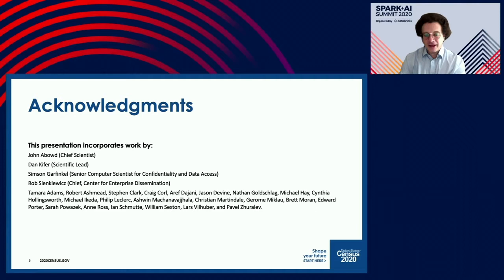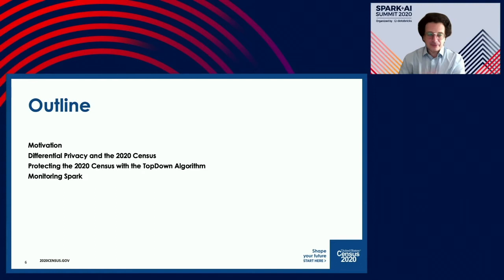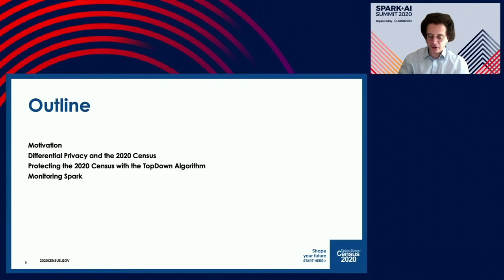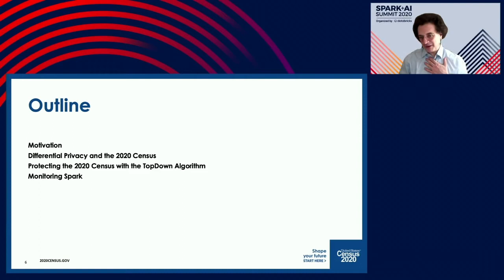Dan Kifer, the scientific lead, came up with the top-down algorithm, and we have a team with many people on it. The outline is: I'll first talk about the motivation behind our use of Spark and differential privacy, then how we're using differential privacy in the 2020 Census, the top-down algorithm, and the work we've done monitoring Spark. This is largely a homegrown system, and if anybody can think of a better way of doing this, please contact me — we're actively looking for additional ideas.